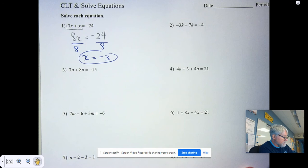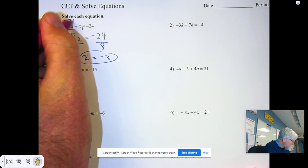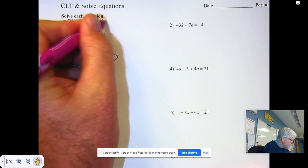You can always check. 7 times negative 3 is negative 21 plus negative 3 is negative 24. That does check.